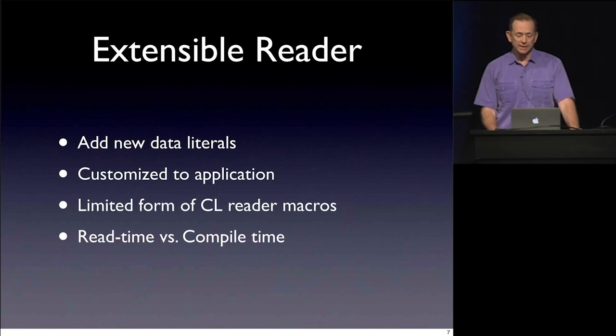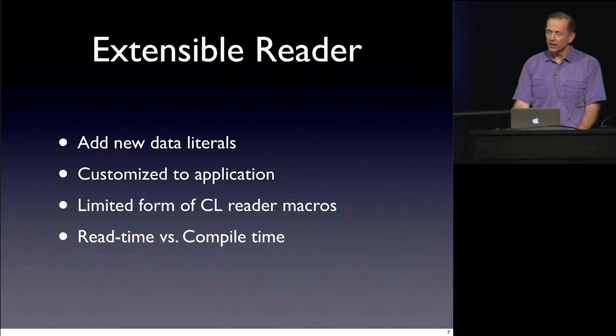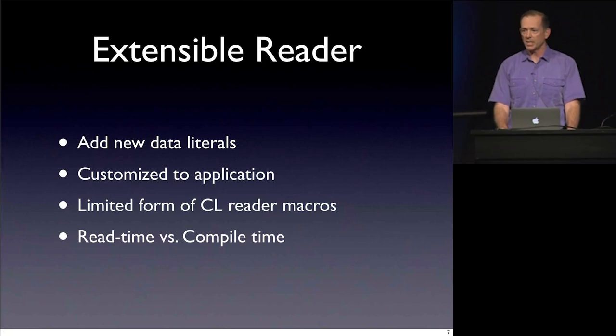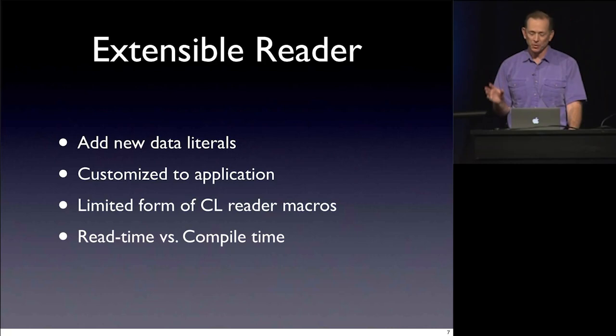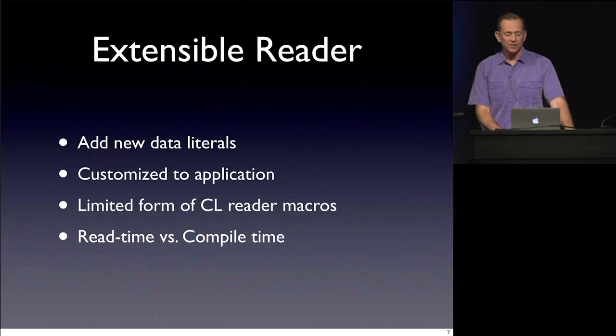Instead of having the reader know only the predefined Java types, you can start adding your own types that the reader will understand — you have a chance to teach the reader how to understand your notation for these tag literals. In a sense, this is a limited form of Common Lisp reader macros. Rich has collected good ideas not just from Lisp but other programming languages, and composed them into a coherent whole. This is a way of getting some of the functionality Common Lisp has in reader macros but in a more controlled form.